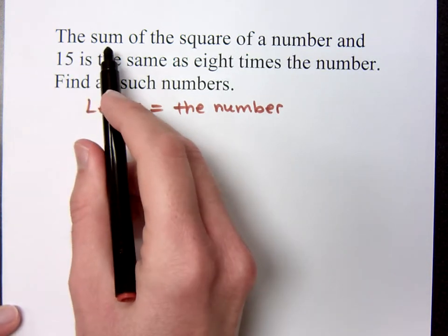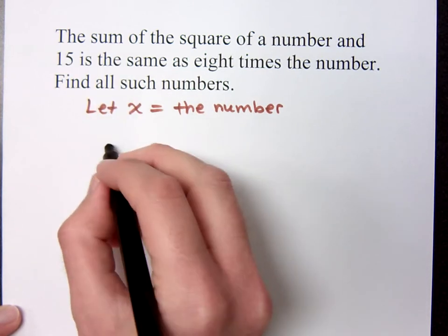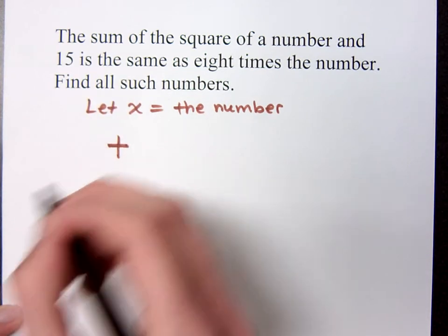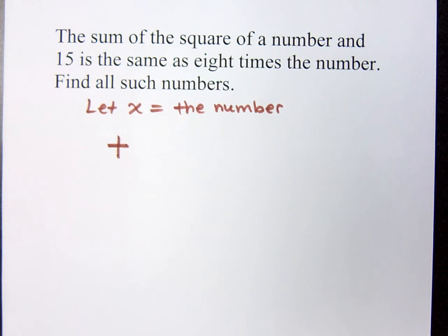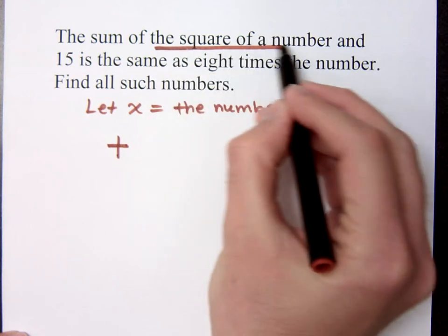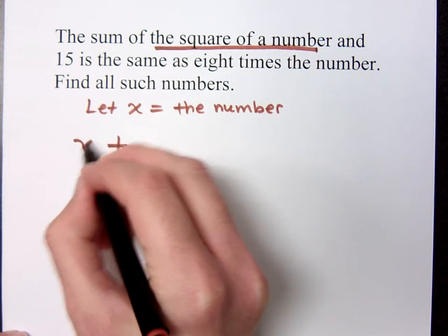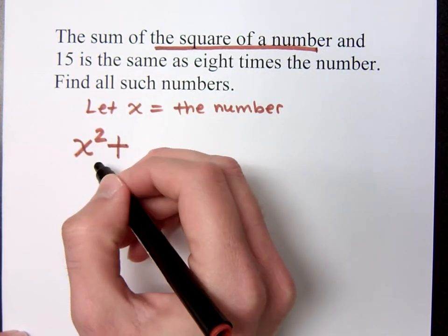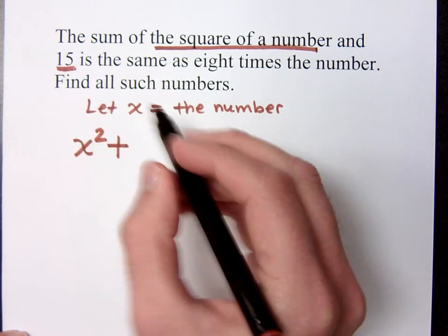The sum, what does the word sum mean? You're adding. You say total, but it's through addition. And what two things are we adding here? The sum of what two pieces? The square of a number. x squared. And the other part of the sum is what? Fifteen.